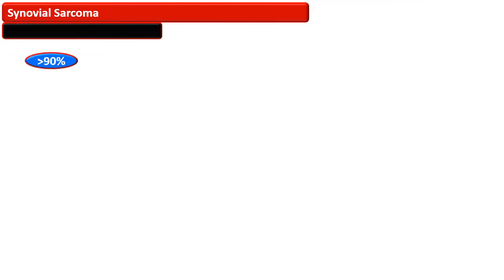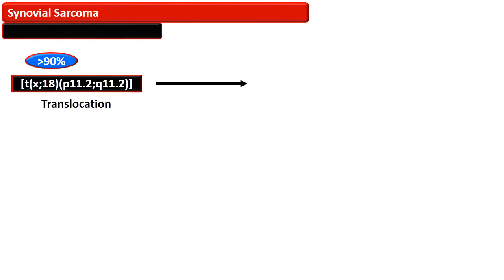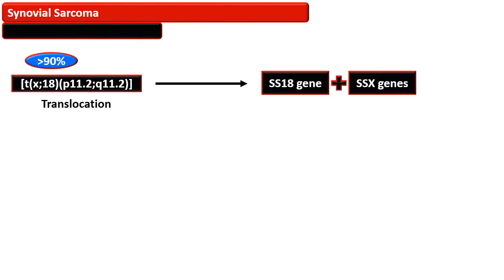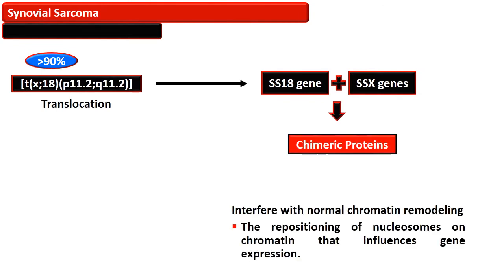More than 90% of cases of synovial sarcoma are associated with translocation between chromosome X and 18. The SS18 gene, previously known as the SYT gene, is fused with the SSX gene. The fusion of these two genes results in production of a chimeric protein which interferes with normal chromatin remodeling.